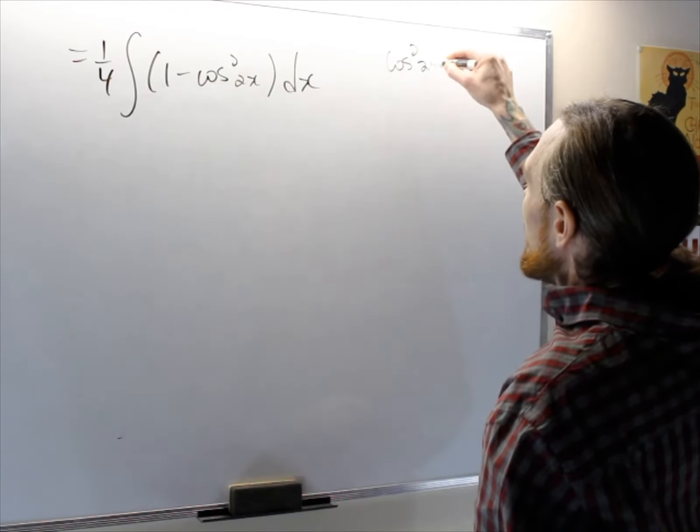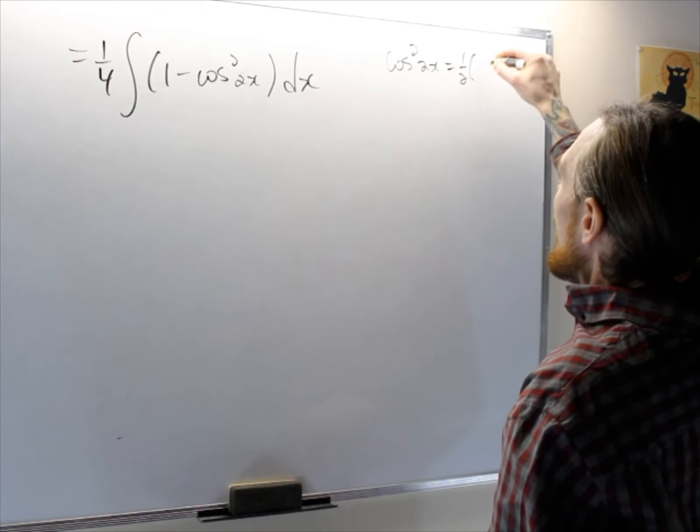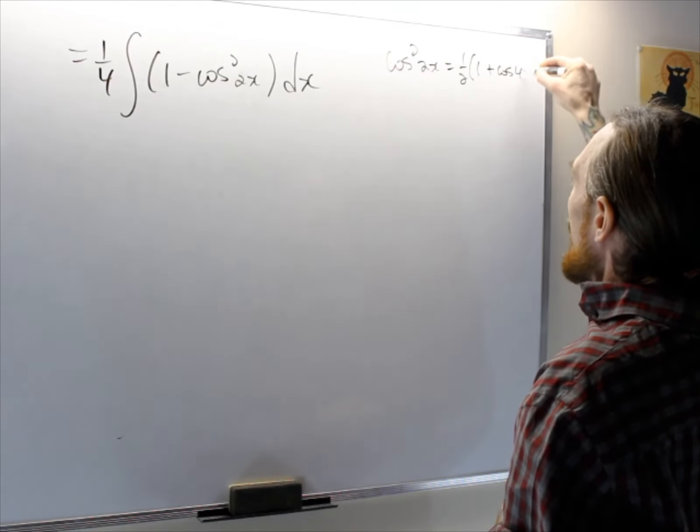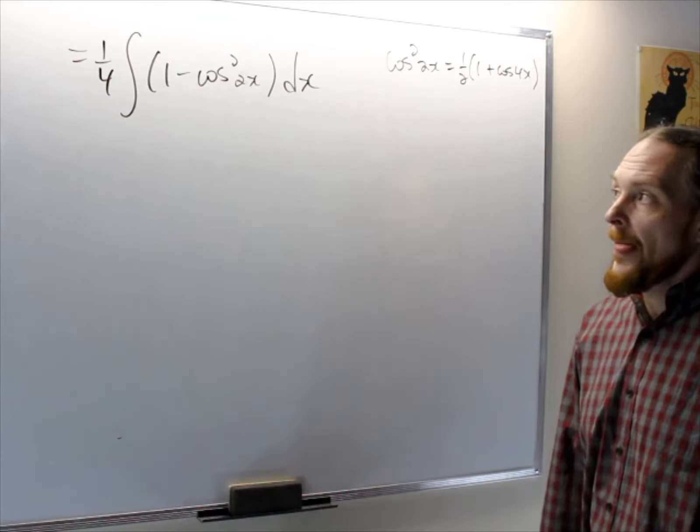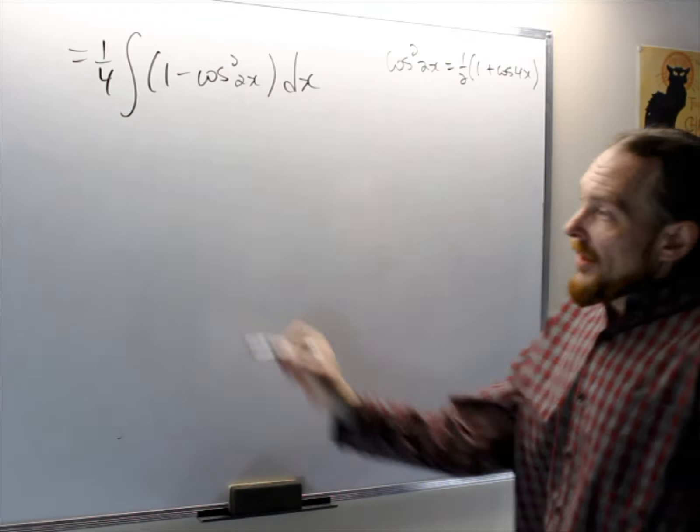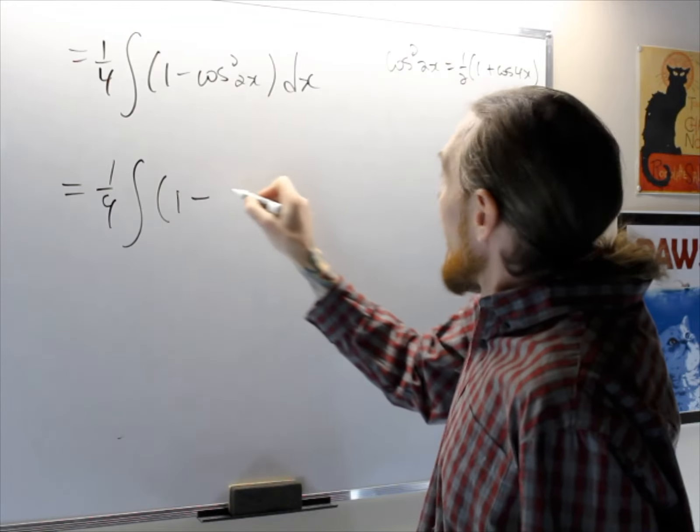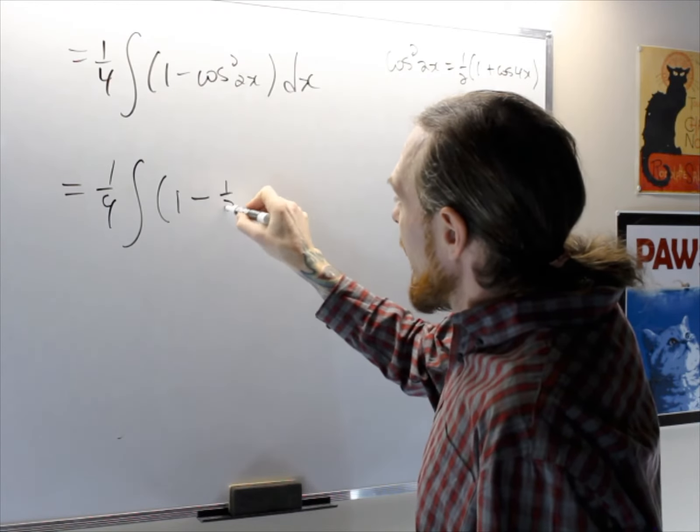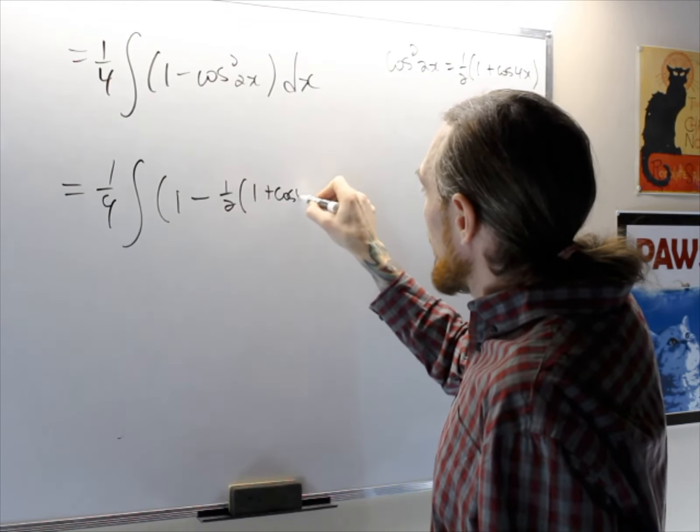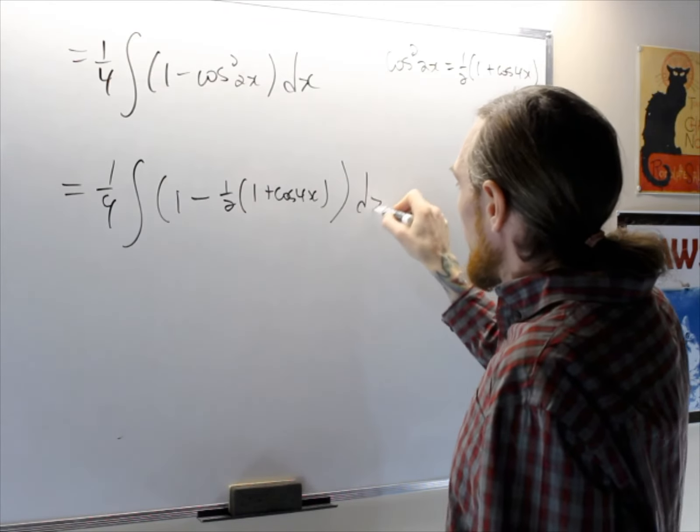So cos squared 2x is 1 half 1 plus cos 4x is what we're going to have, so what we do with that is we get 1 over 4, 1 minus, and now we have this, 1 half 1 plus cos 4x dx.